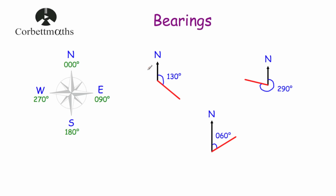Well, a bearing is a direction of travel and is measured clockwise from north. So if we were travelling in this direction and we wanted to find the bearing, we would measure the angle clockwise from north. So if that was 130 degrees, the bearing would be 130 degrees.